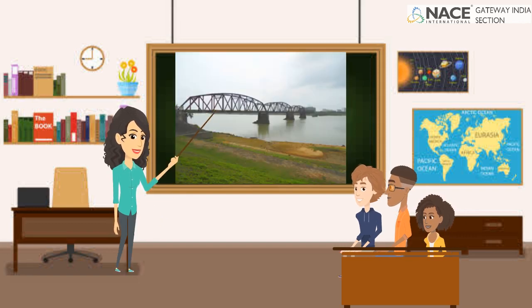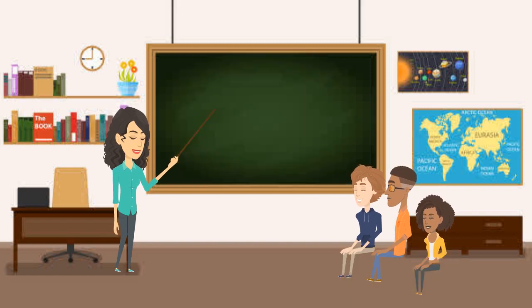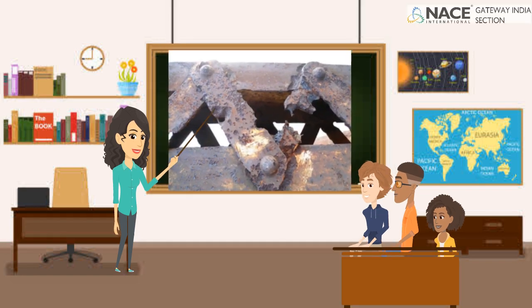Look at this. This is another example — an old iron bridge in China. See how badly it got corroded. It even collapsed in the year 2000, which is really bad for all of us.